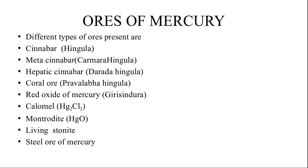Now let's consider the ores of mercury. Mercury will exist in either native form — that is free mercury — or in the form of compounds, that is ores. Two types of forms are there: mukta swarupa and yaugika swarupa. The major ores of mercury are cinnabar (Hingula or HgS), metacinnabar, charmara hingula, hepatic cinnabar (darada hingula), coral ore, pravalaba hingula, red oxide of mercury (girisindura), calomel (Hg2Cl2), montroydite (HgO), livingstone, and steel ore of mercury.